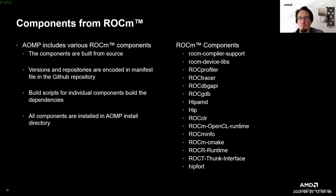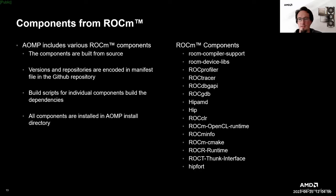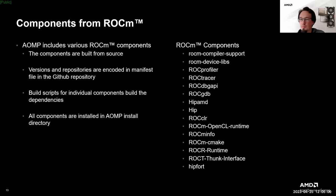For AOMP's own point releases, the manifest file is created separately so that it is available for future builds. In addition to the manifest file, the AOMP repository has a build script for each component that builds that component in a configuration suitable for AOMP, by setting the right CMake flags and installing it into the AOMP install prefix.